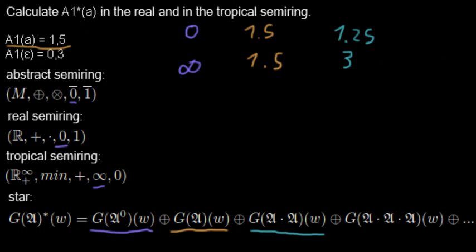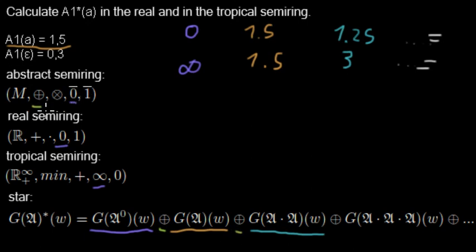Now let's look at the addition step. In the abstract semi-ring, addition is at the second position. For the real semi-ring it is the usual plus, so we have to add all the weights to each other — and then do an infinite number of further additions.